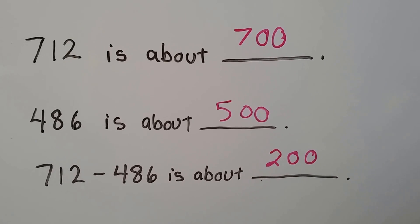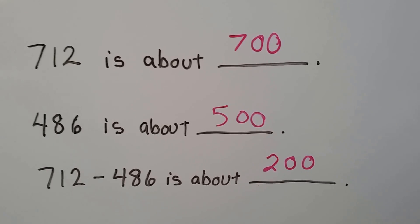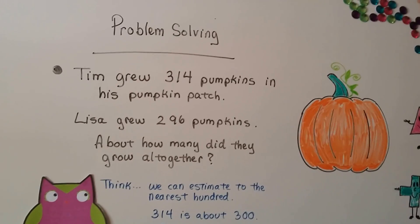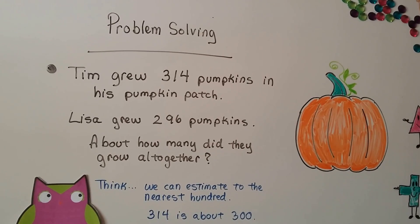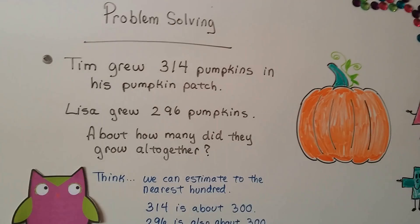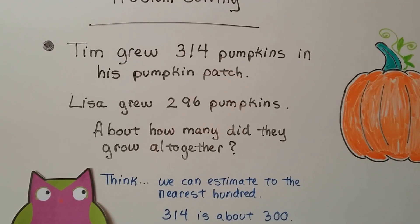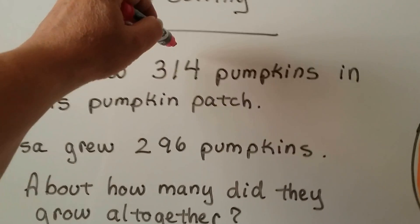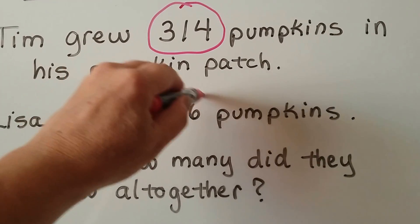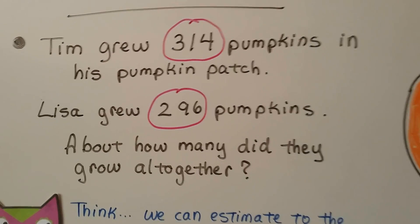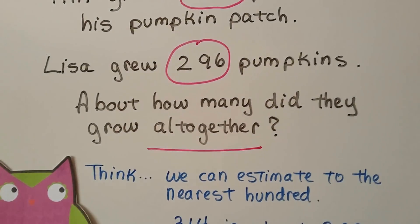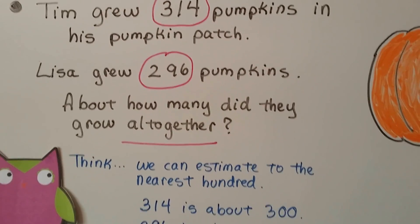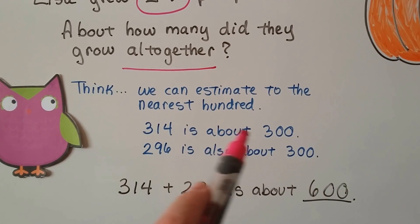Let's try some problem solving. Tim grew 314 pumpkins in his pumpkin patch. Lisa grew 296 pumpkins. About how many did they grow all together? We can estimate to the nearest hundred. Tim's is 314, Lisa's is 296. Those are important numbers. It says about how many did they grow all together. That's our clue word that tells us to add. 314 is close to 300, 296 is also about 300.